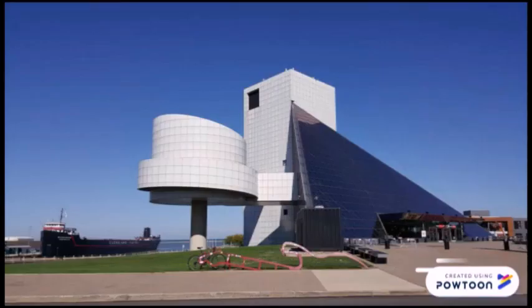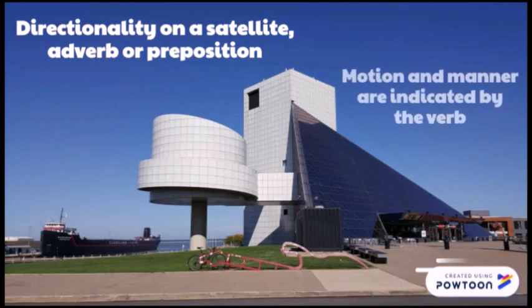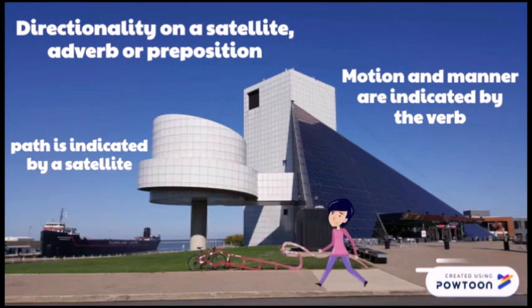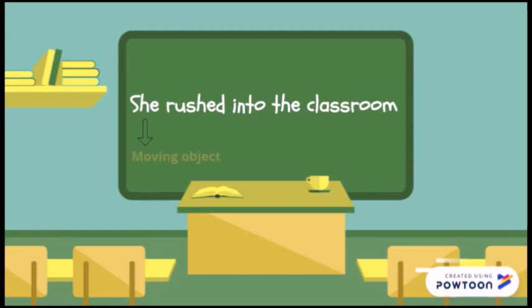English is a satellite-framed language as it encodes directionality on a satellite, adverb or preposition. Motion and manner are indicated by the verb and path is indicated by a satellite, such as a particle or an adverb. For example, if we say she rushed into the classroom, the pronoun and subject, she, would be the moving object. The verb rushed would indicate motion and manner and into the classroom would indicate the path. By the way, thank you, Sonia, for your valuable example.